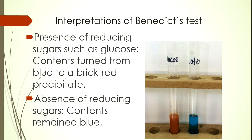How do you interpret Benedict's test results? If a reducing sugar is present, the contents will turn from the initial blue solution to a brick-red precipitate. Precipitate means there is a solid substance found in the liquid mixture. In the case of water, the contents will remain blue, indicating that reducing sugars are not present.